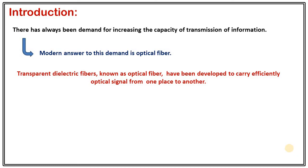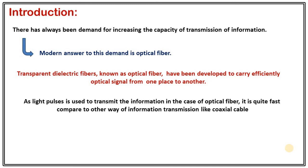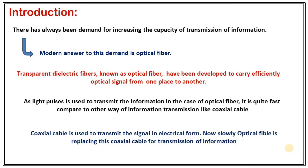Looking at this definition, you can easily judge why this is called optical fiber — because the structure looks like a fiber which is made up of dielectric medium, and it is called optical because optical signals, that is light pulses, are used to transmit information from one place to another. Naturally, light pulses will be very fast compared to other ways of transmission, like the coaxial cable where information is sent as electrical signals.